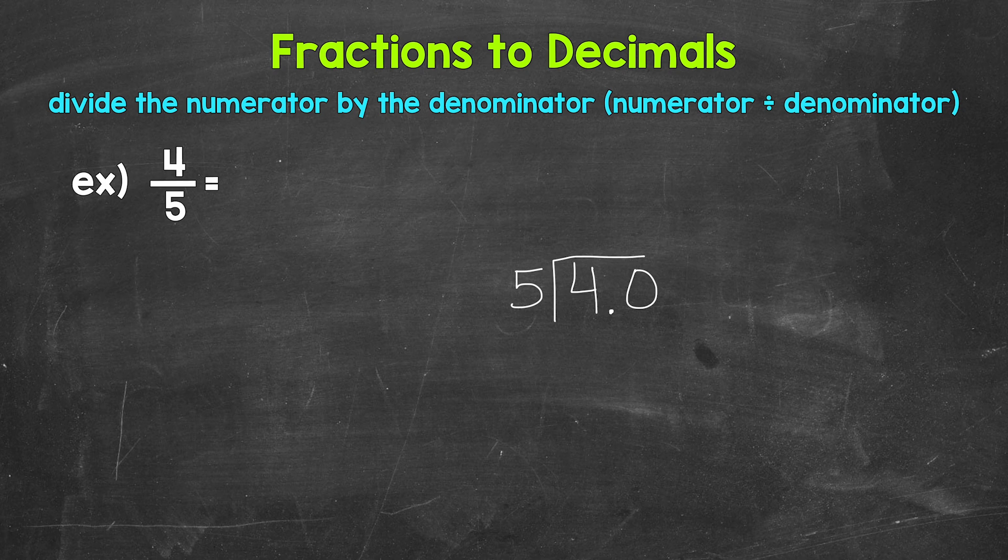Now that we have that decimal and the zero, we can bring the decimal straight up into where the quotient, the answer, will be. And now we can think of this as 40 divided by 5, which is 8. Now that 8 needs to go above the zero, since we used that zero and thought of this as 40 divided by 5, and that's going to line us up correctly.